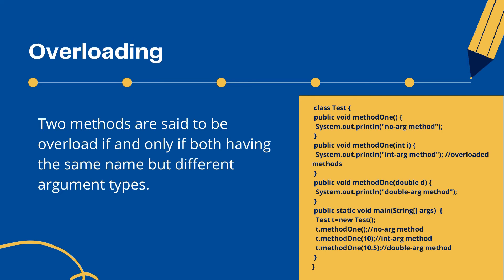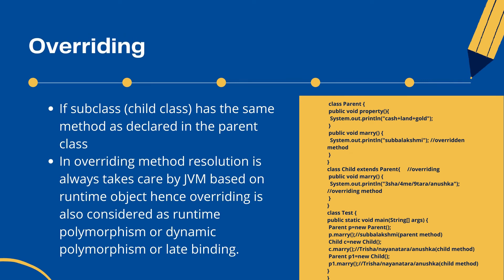Now what is overriding? In overriding, whatever method the parent has is by default available to the child through inheritance. The parent class method which is overridden is called the overridden method, and the child class method which is overriding is called the overriding method. In this example, I have declared a parent class with one method, then I extend the parent class in the child class and call the same method — that's overriding.